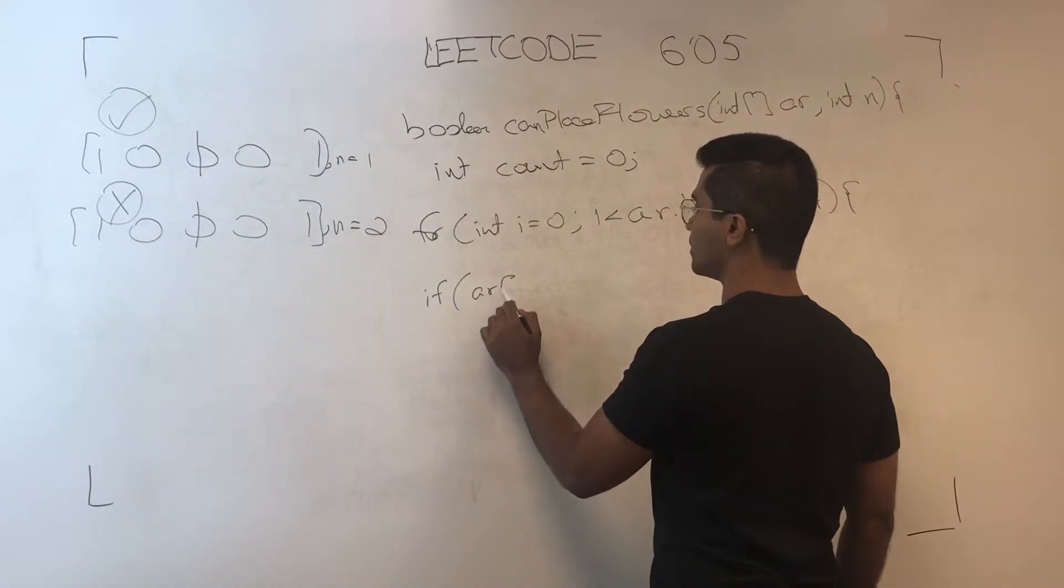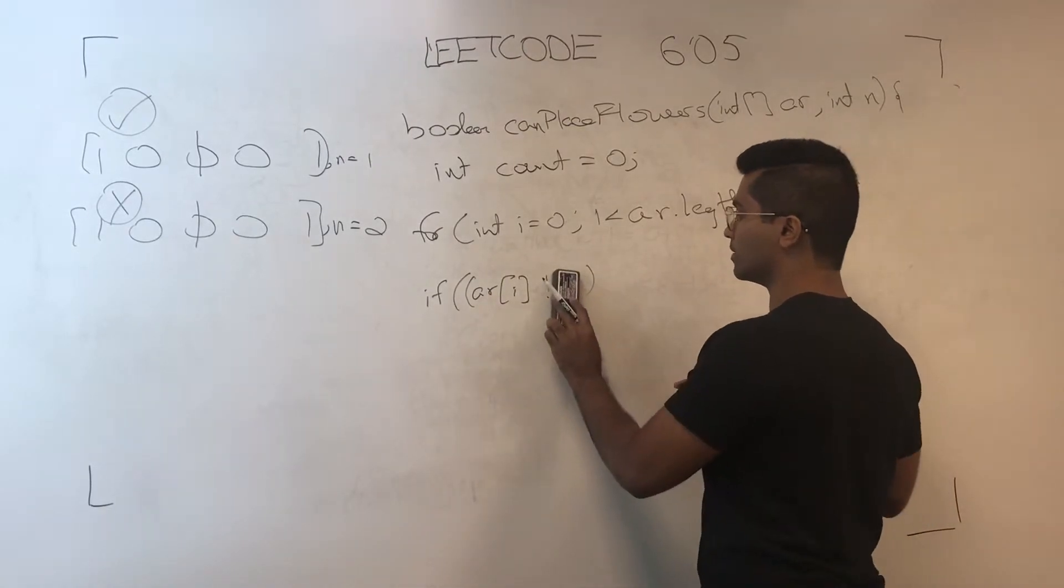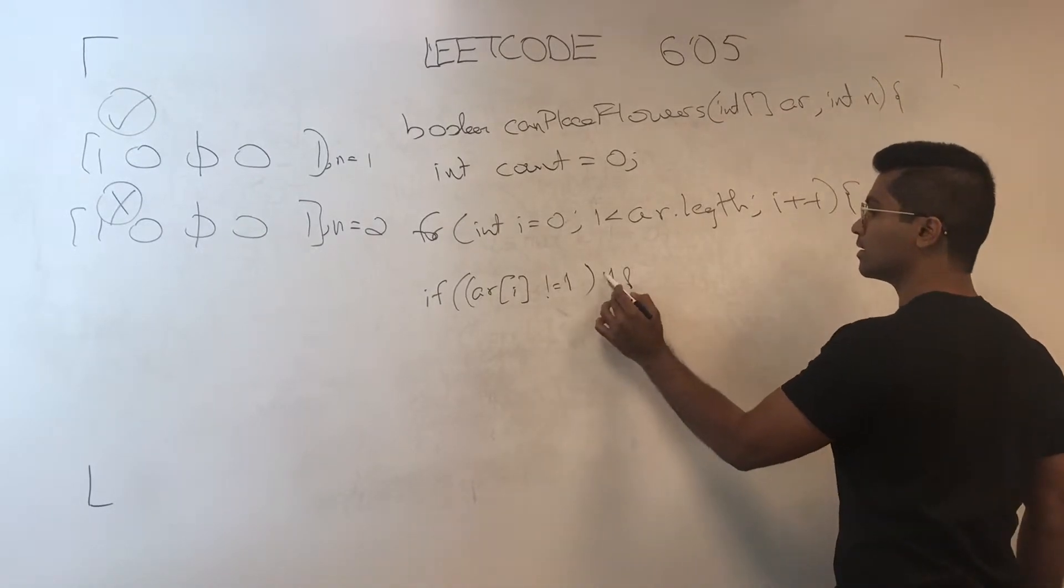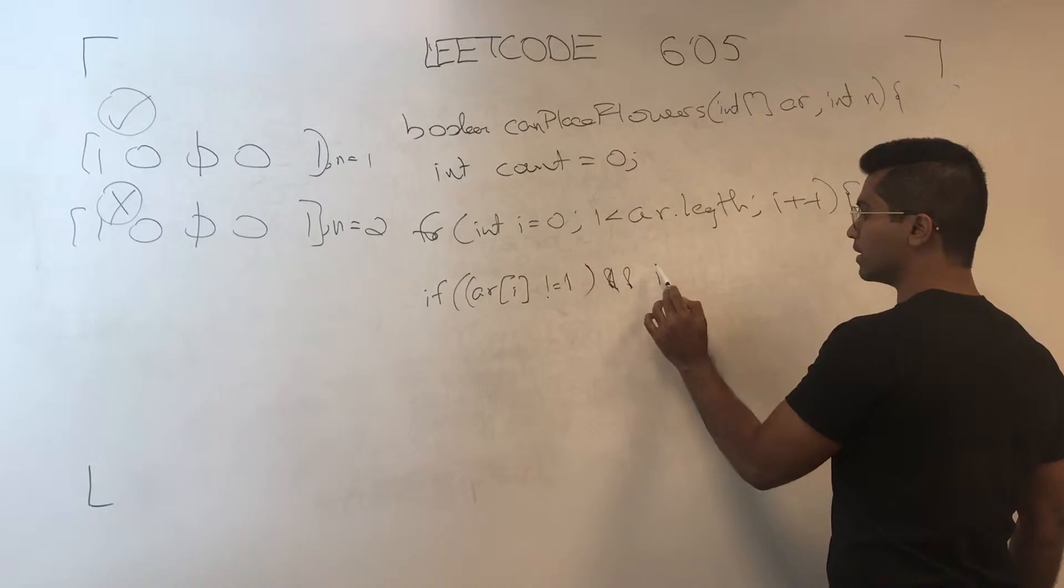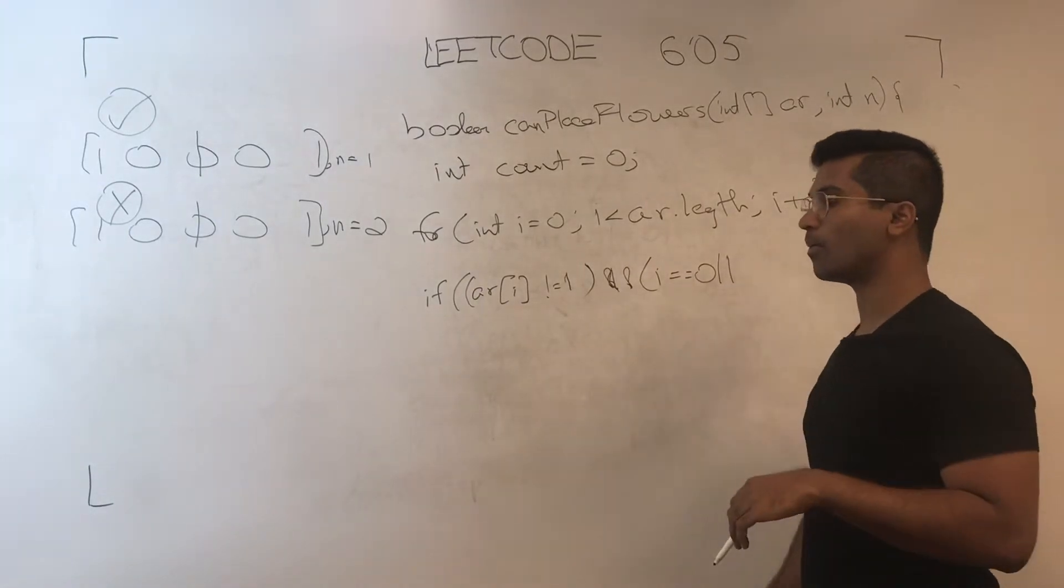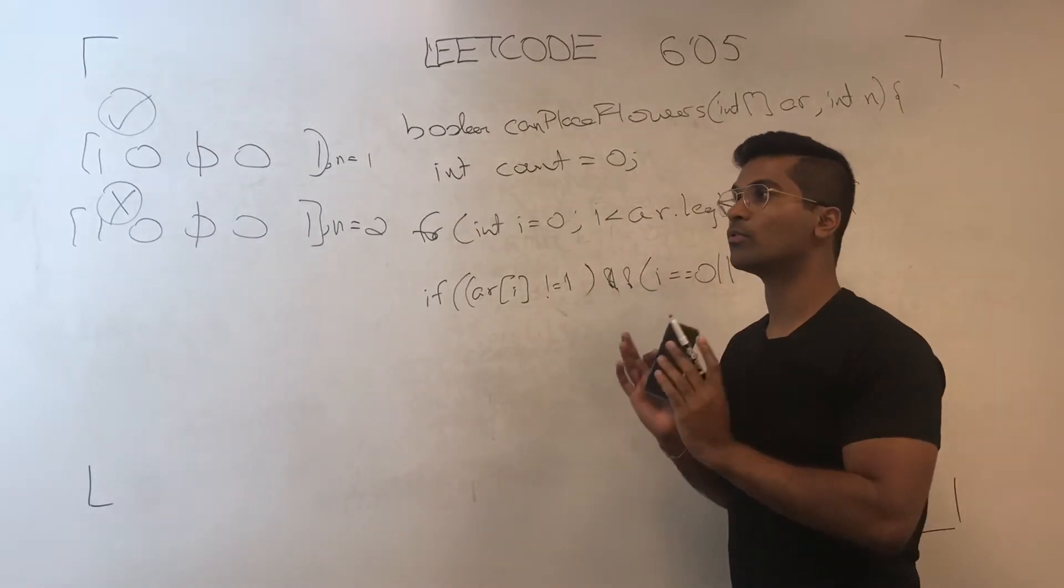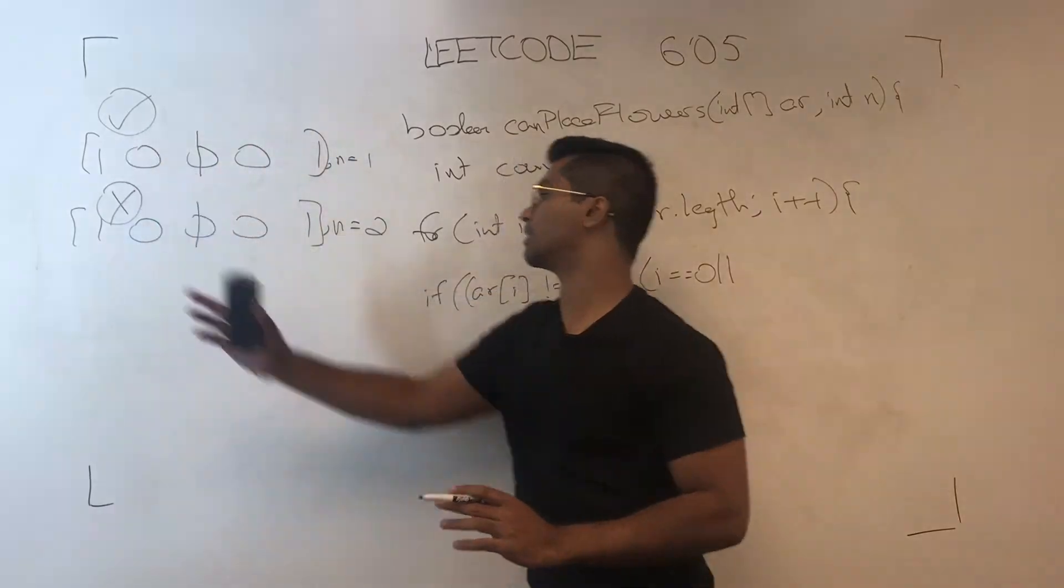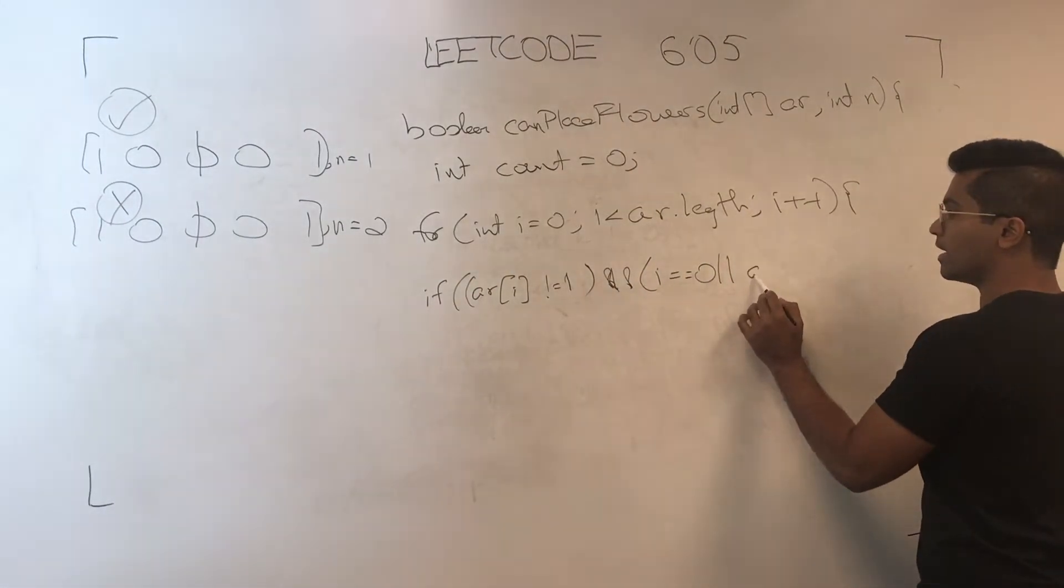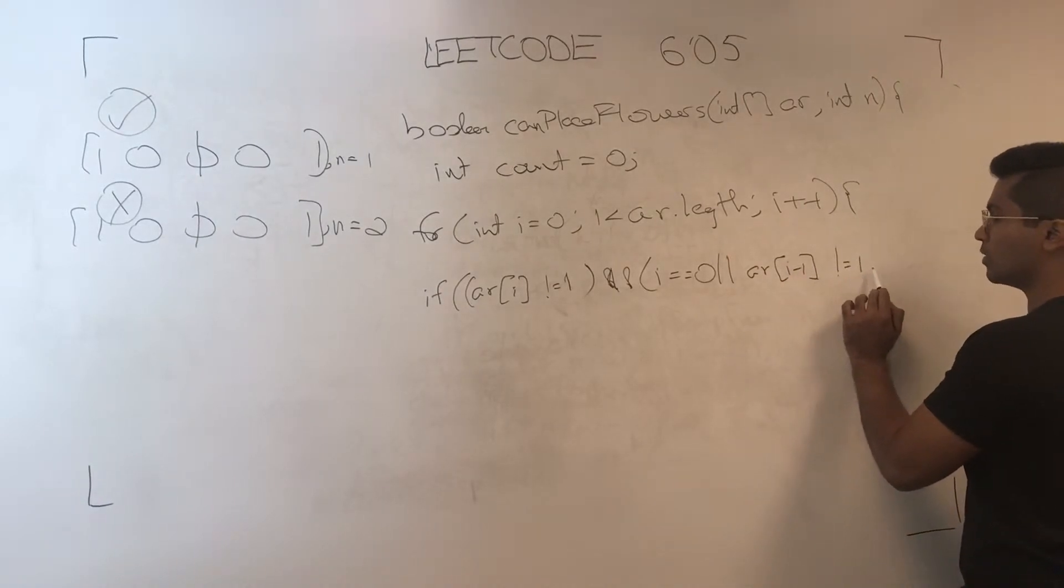If ar of i is not equal to one, that means it's empty. And we are either at the beginning or there is no flower right behind i. So, i minus one. Or, ar of i minus one is not equal to one.